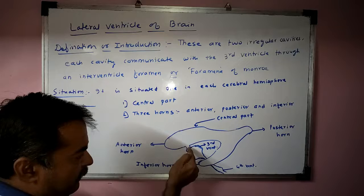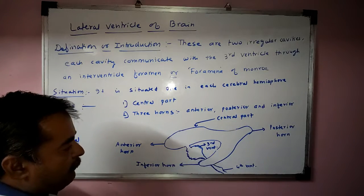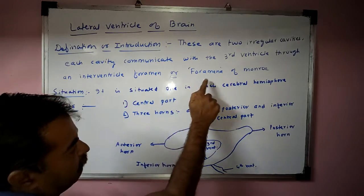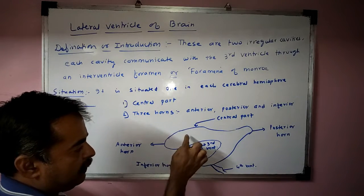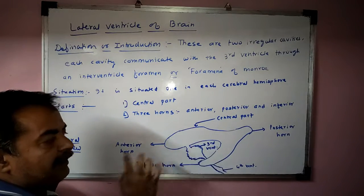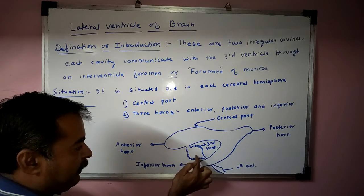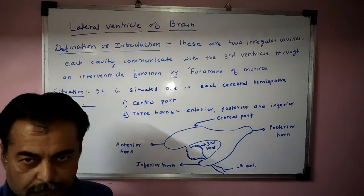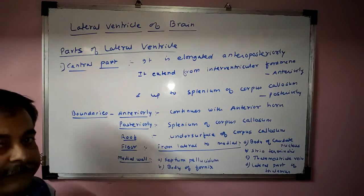The lateral ventricle connects with the third ventricle. As we are seeing in the lateral view, this is a single lateral ventricle which is connected with the third ventricle through the foramen called as the foramen of Munro. Now we will see the parts of the lateral ventricle in detail.